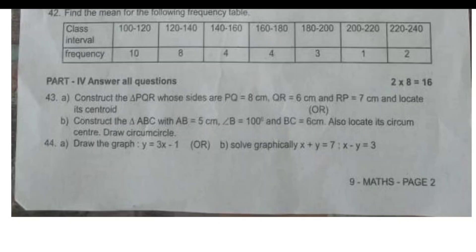So we have to construct the triangle PQR whole sides PQ is equal to 8cm, QR is equal to 6cm and RP is equal to 7cm, and locate its centroid. And construct the triangle ABC with AB is equal to 5cm, angle B is equal to 100 degree and BC is equal to 6cm. Also locate its circumcenter and draw the circumcircle. If you draw the graph Y is equal to 3x minus 1, then solve graphically X plus Y is equal to 7, X minus 3 is equal to 3.